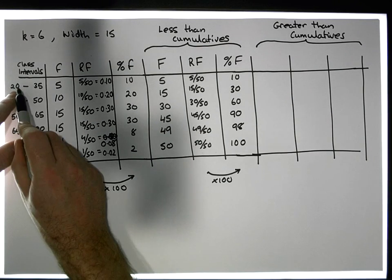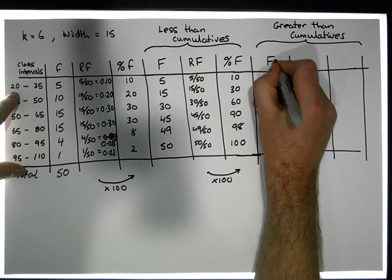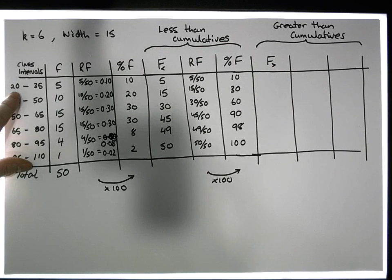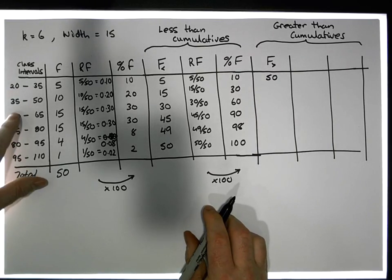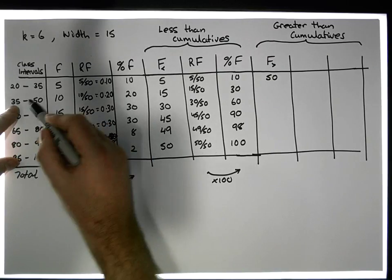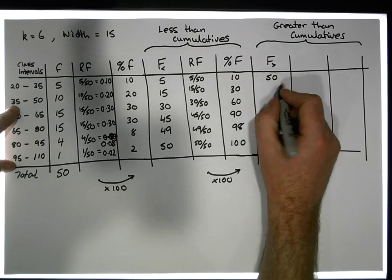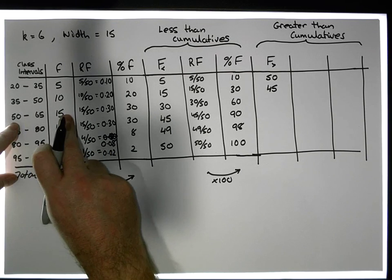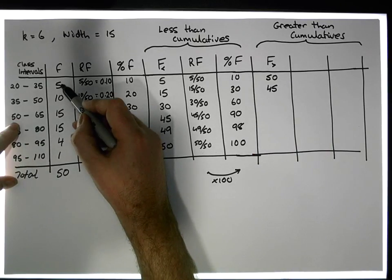Well, all of the observations are greater than 20, so there are 50 observations. How many observations are greater than 35? The only observations not included are the 5 in the previous class, so 50 minus 5 gives us 45 observations greater than 35. How many observations are greater than 50? That's the 15, 15, 4, and 1, which is 45 minus the 15 previous observations, giving us 30 observations greater than 50.